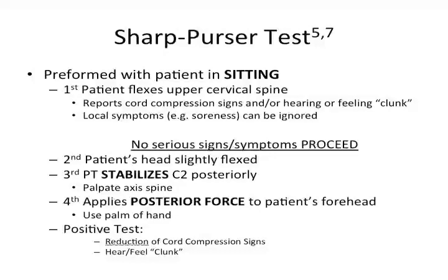An alternative to the transverse ligament test is the Sharp-Purser test, performed with the patient in sitting. First, the patient flexes their upper cervical spine and reports any cord compression signs and/or the hearing or feeling of a clunk. Local symptoms such as soreness can be ignored. If there are no serious signs or symptoms, the physical therapist may proceed with the test.